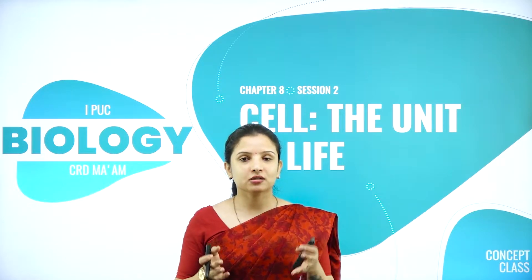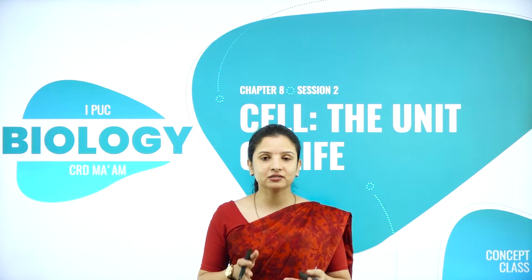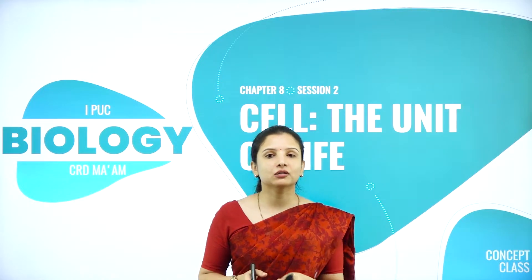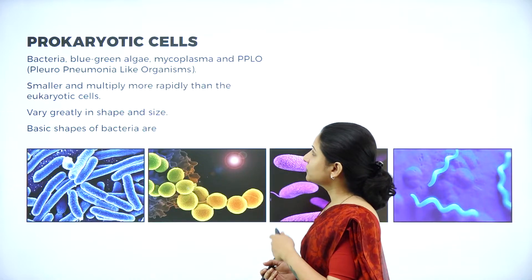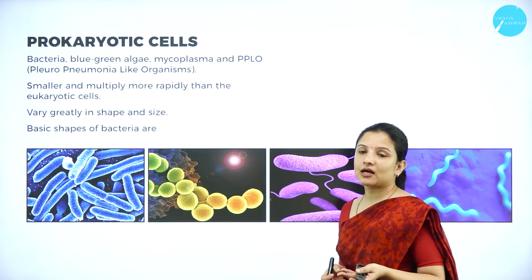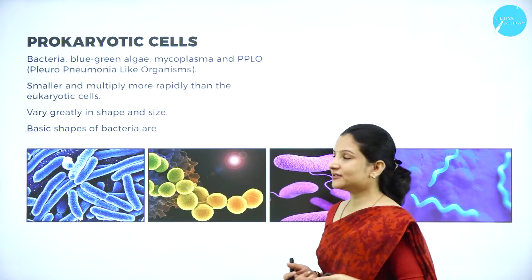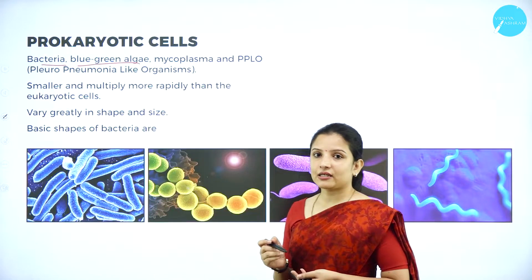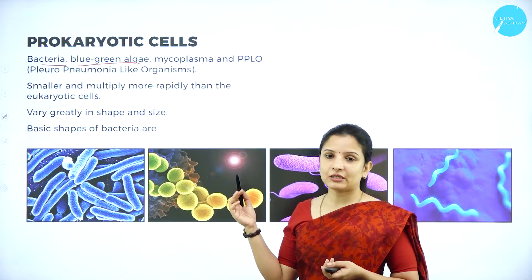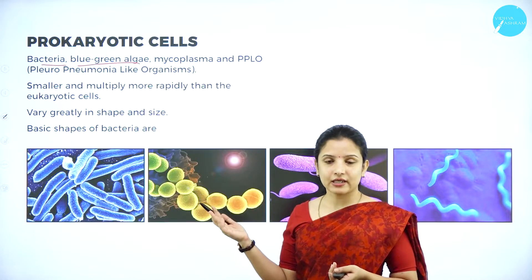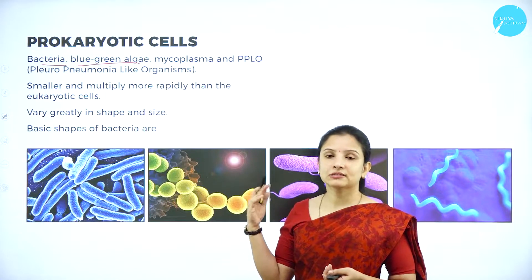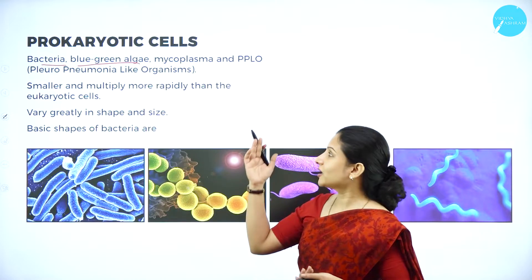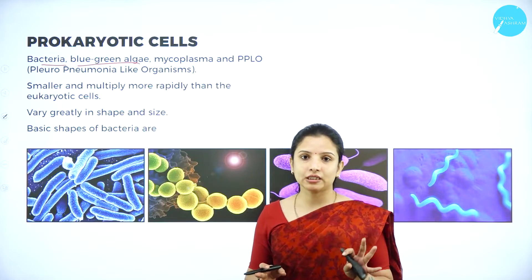In today's session, I shall concentrate mainly on the prokaryotic cells — what they are made up of and what components are present inside. The best examples of prokaryotic cells are bacteria and blue-green algae. Blue-green algae is actually cyanobacteria — it is not a true algae but a bacteria. These bacteria have the capability to photosynthesize as they have chlorophyll pigments, which is why they are called blue-green algae.